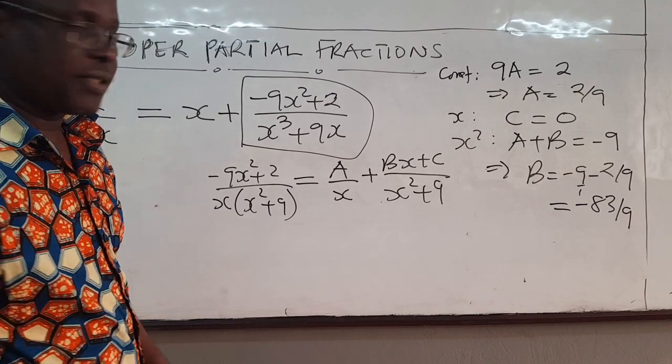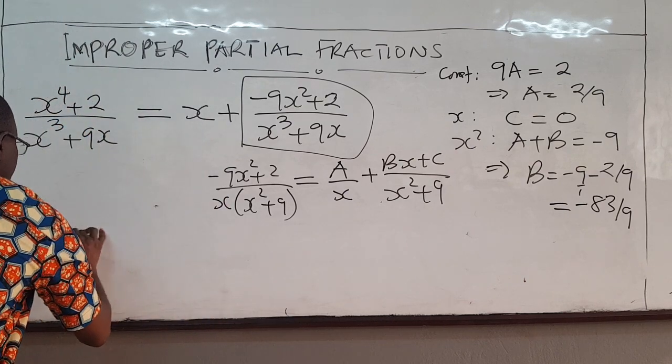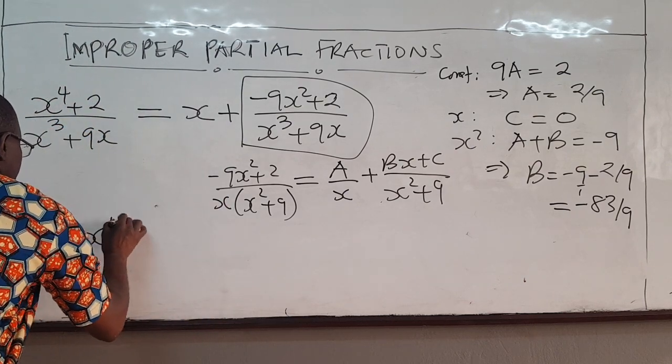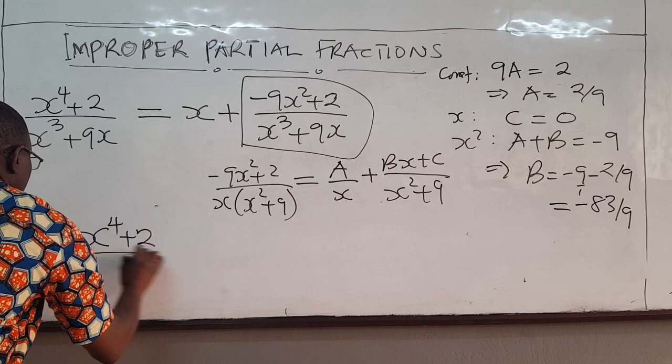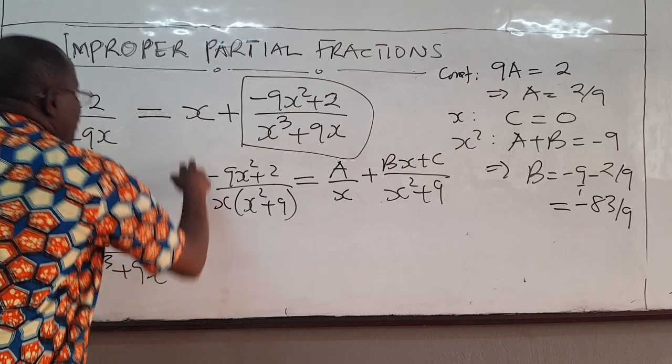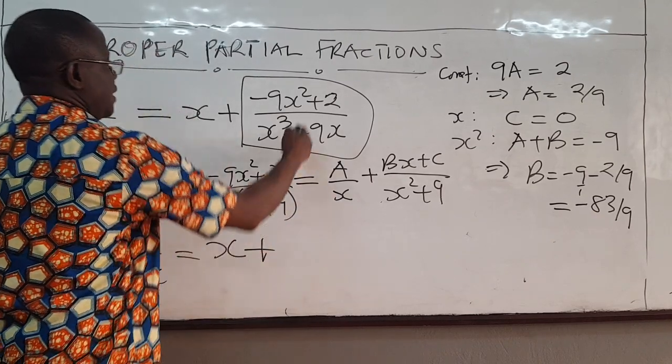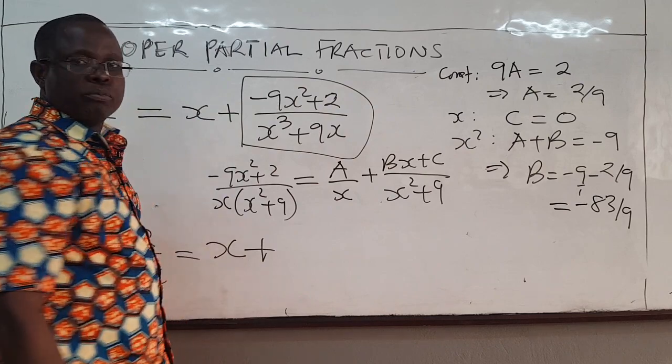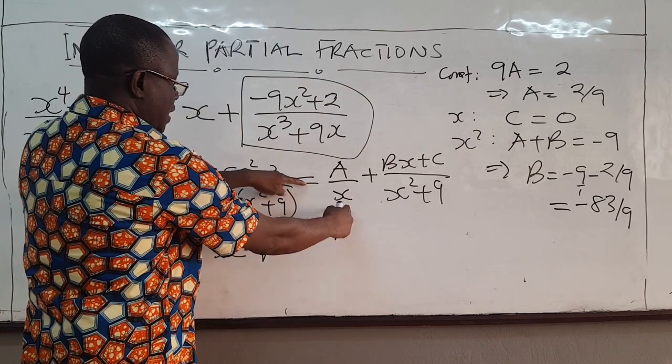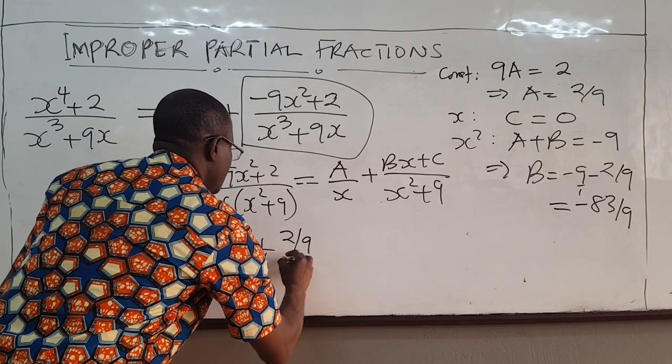So I am just going to write the final solution here. So eventually x to the 4 plus 2 all over x cubed plus 9x would be equal to, non-forgetting x, plus. This guy we have. The composite is a over x. A is 2 over 9. 2 over 9, 1 over x.